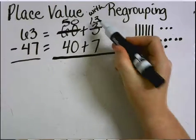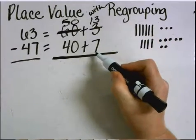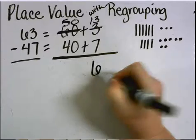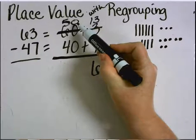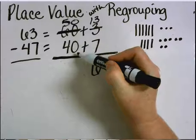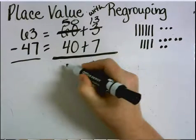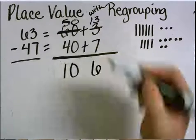13 ones subtract 7 ones, I can do. That equals 6 ones. 50, or 5 tens, subtract 40, or 4 tens, equals 10, or 1 group of 10.